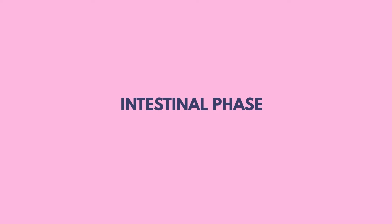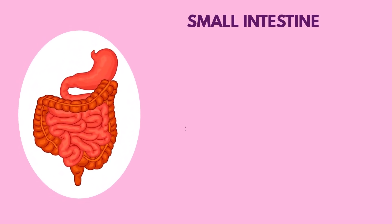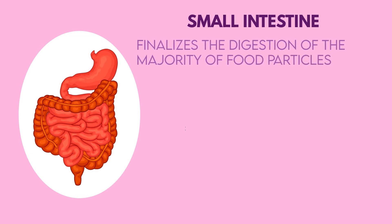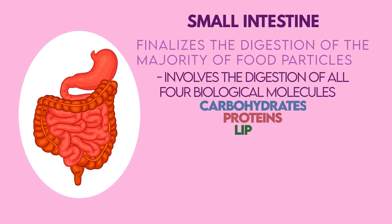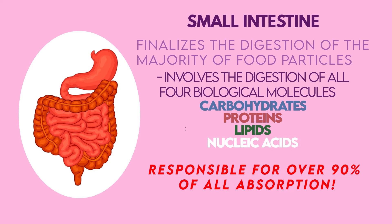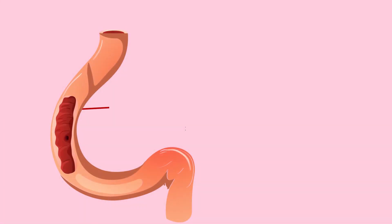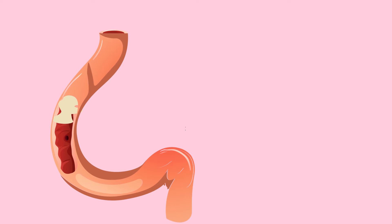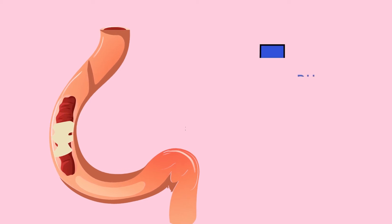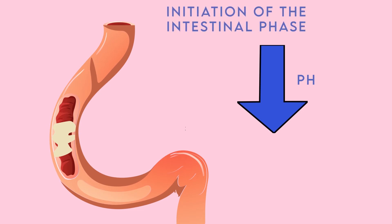Next up is the intestinal phase and the small intestine. The small intestine is the organ that will finalize the digestion of the majority of food particles and is the only organ that involves the digestion of all four biological molecules: carbohydrates, proteins, lipids, and nucleic acids. The small intestine is also where over 90% of all absorption occurs. The chyme entering the small intestine is a slurry of partially digested starch, proteins, lipids, and nucleic acids. The inflow of chyme causes the duodenum to distend and experience a decrease in pH, both of which initiate the intestinal phase of digestion.